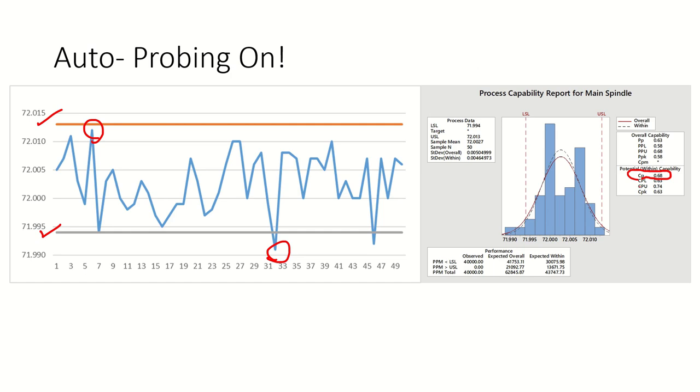Our Cpk is 0.63, so we have a very, very poor process—poor capability. We are going to make defects all day long with this situation. That's with the automated probe and the automated adjustment system switched on.